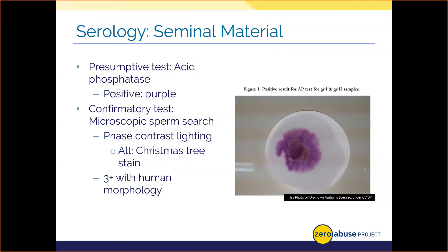AP testing results aren't always this simple. Sometimes weak positives — a pink coloration — have been known to occur. Some analysts will call this a slight color change versus a true positive result, and some labs handle these differently. Personally, I would test with a confirmatory test since we can't rule out the presence of semen, but some labs have strict policies where they only process samples with purple coloration, meaning any slight color change may not move forward.